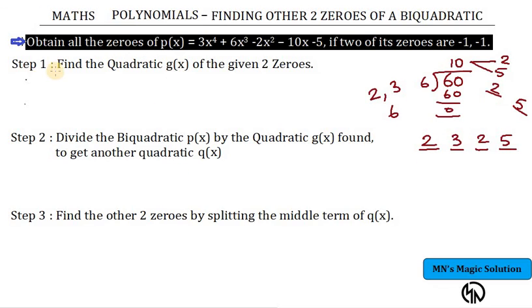Step 1: First, with the 2 zeros, x is equal to minus 1 and the other zero is also minus 1. x is equal to minus 1 means the factor is x plus 1. So which is the factor? x plus 1 is a factor. For two factors, what should we do? Multiply them. So the quadratic g(x) is nothing but x plus 1 into x plus 1, which is (x + 1) whole squared.